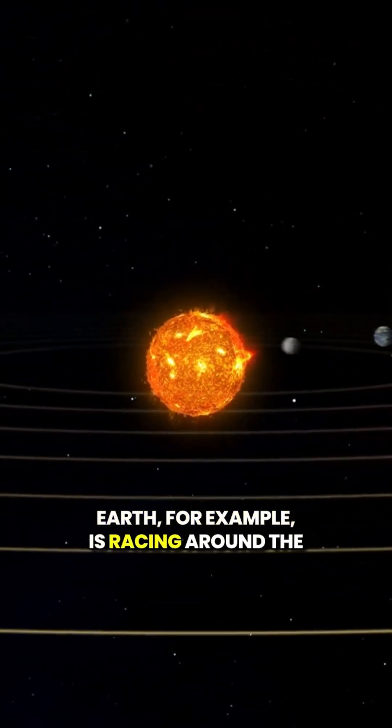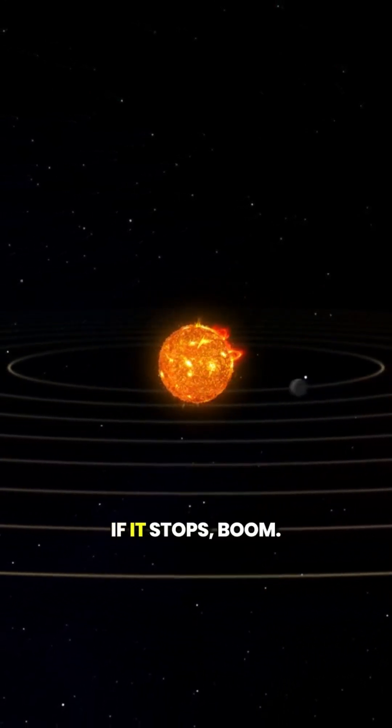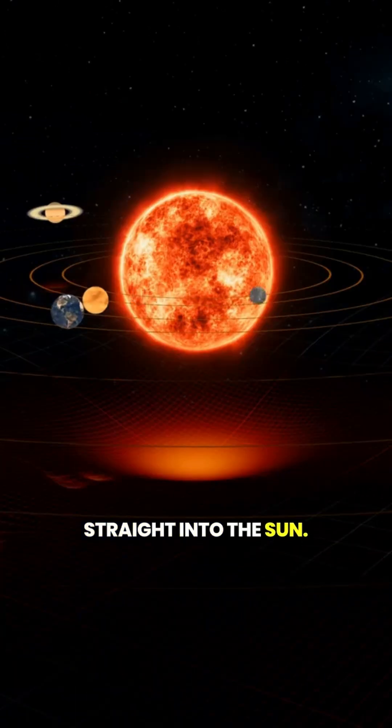Earth, for example, is racing around the sun at 67,000 miles per hour. If it stops, boom, straight into the sun.